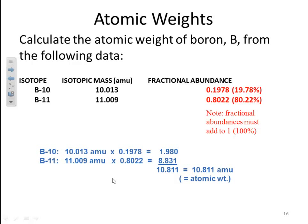Do the math. You have your 10.013 AMUs times your fractional abundance, which gives you 1.980. Your 11.009 AMUs times your 0.8022 fractional abundance gives you 8.831. Add that up gives you 10.811 AMUs.